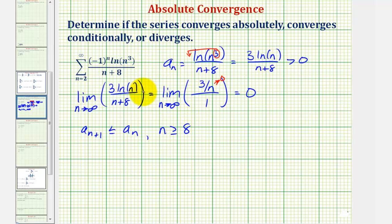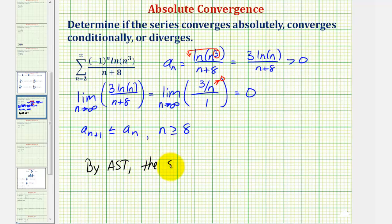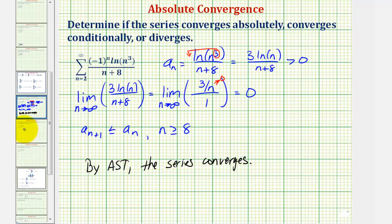Our series does converge by the alternating series test, but we're not done — we still have to test for absolute or conditional convergence. By the alternating series test the series converges, and now to test for conditional or absolute convergence we need to determine if the summation of the absolute value of a sub n converges or diverges.